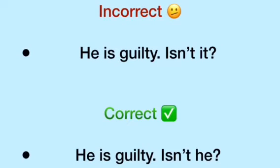Next: 'He is guilty, isn't it?' No. The correct sentence is: 'He is guilty, isn't he?'